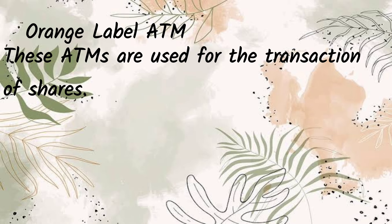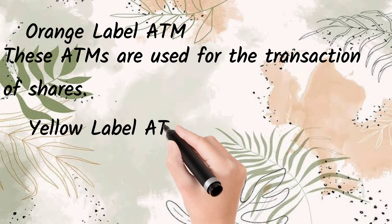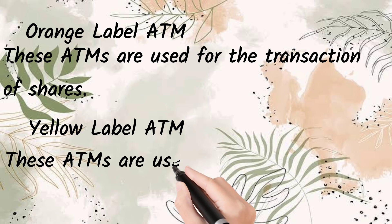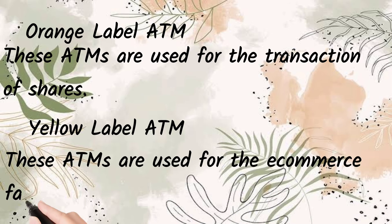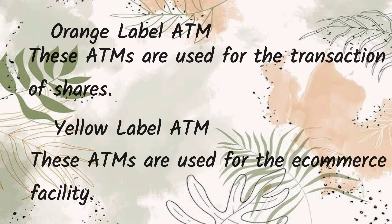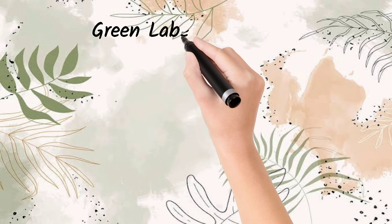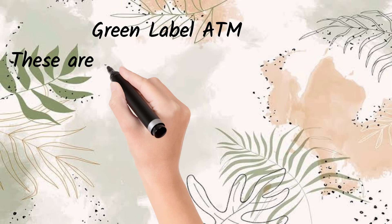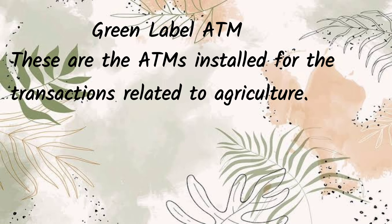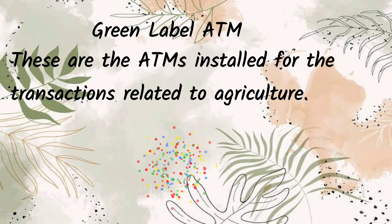Orange label ATMs are used for the transaction of shares. Yellow label ATMs are used for e-commerce facilities. And green label ATMs are installed especially for agriculture-related transactions — only agriculture-related transactions can be performed at green label ATMs.